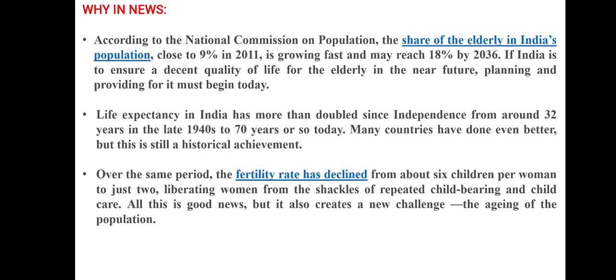This is still a historical achievement. In that period, the fertility rate has declined from about 6 children per woman to just two, liberating women from the shackles of repeated childbearing and childcare. This is good news, but it also presents a challenge — that is the ageing of the population.